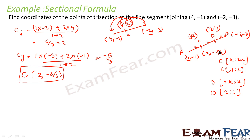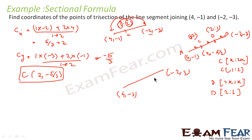Point C is (2, -5/3). Now let us find D. For D, the ratio is 2 is to 1. It is easy — you do not need to remember the formula; you can use this approach.